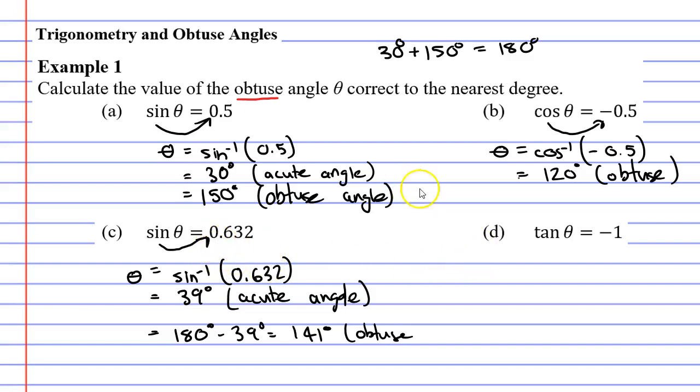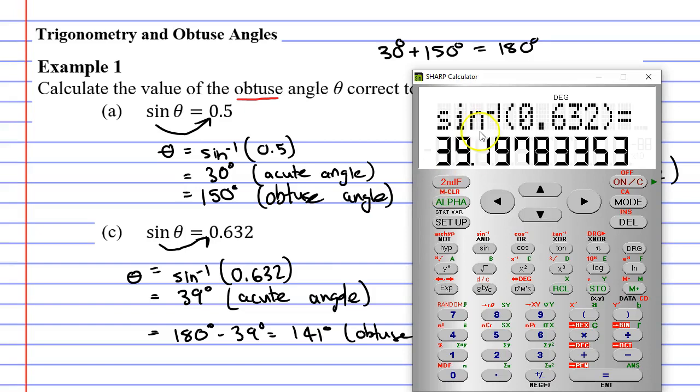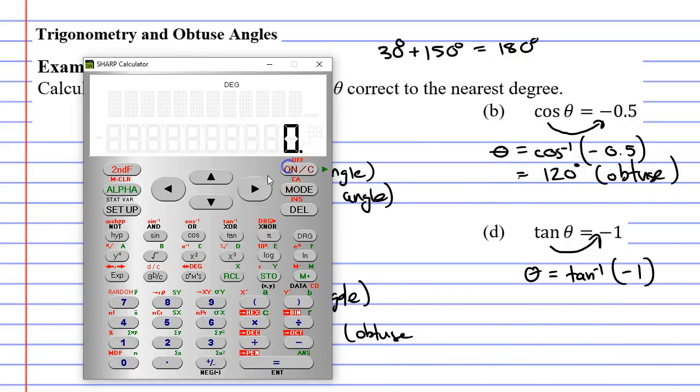All right finally moving on to question D. Following the same process bringing tan to the other side but using inverse tan. Tan to the negative one and in brackets we put negative one. Okay bringing up our calculator this time. Second function tan bracket negative one.